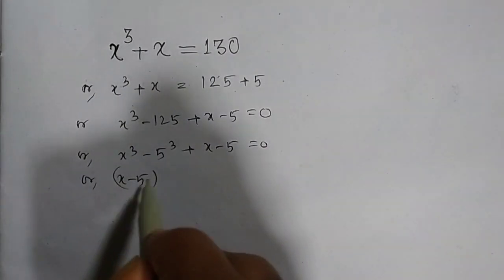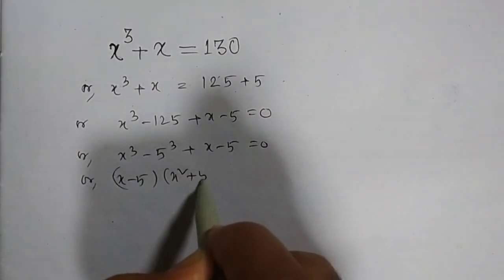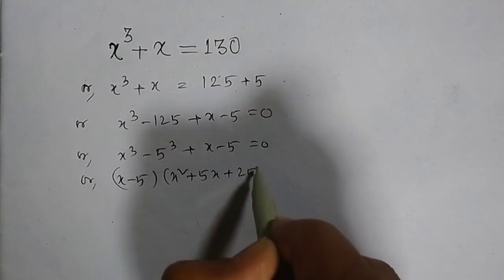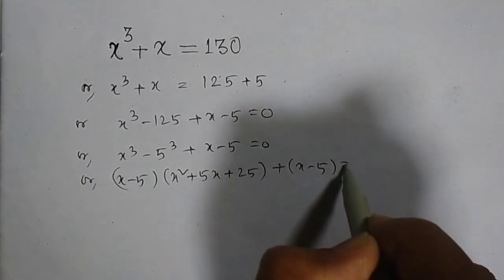x - 5 into x² + 5x + 25, plus x - 5, is equal to 0.